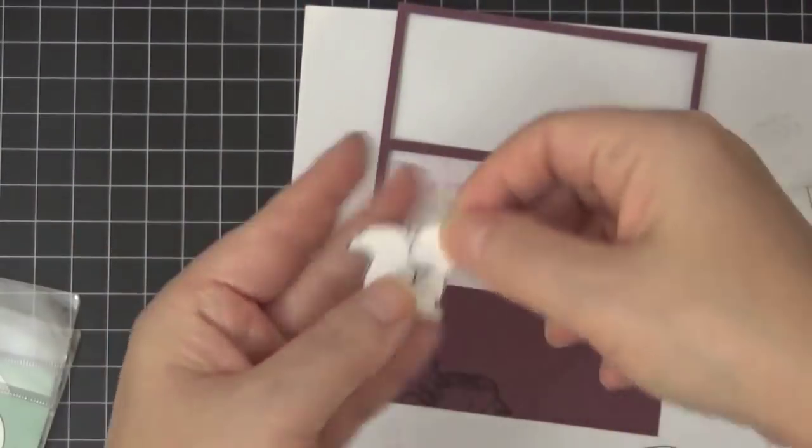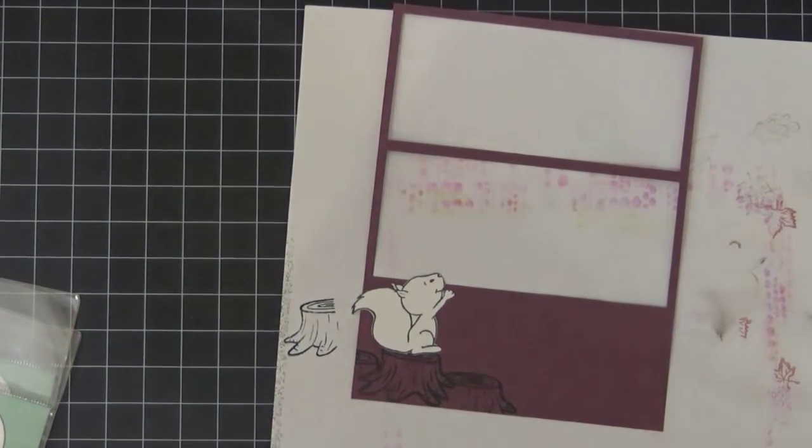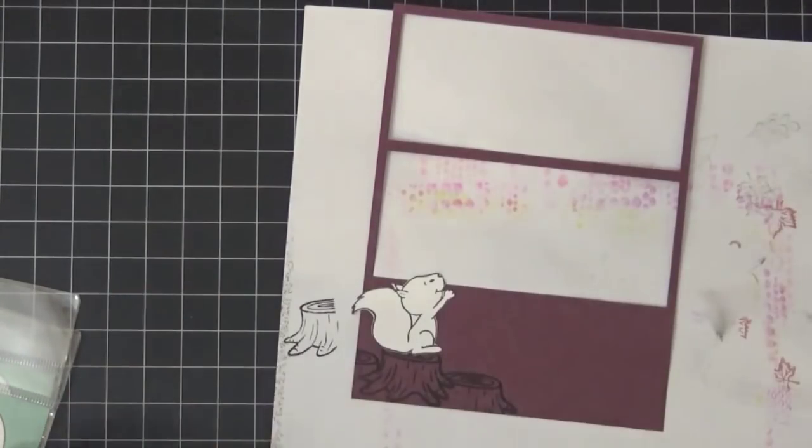And I already stamped and cut out this squirrel. I use my ScanNCut to cut it. Majority of the time I use my ScanNCut. And I want my squirrel to be looking up the sky.